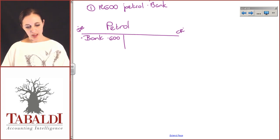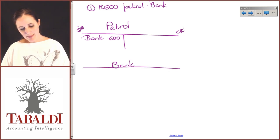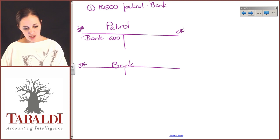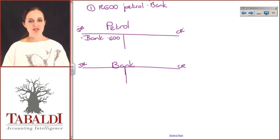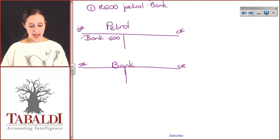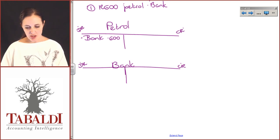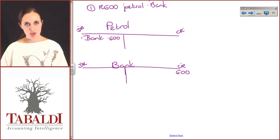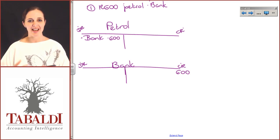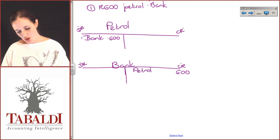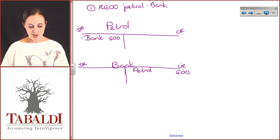You have to show the other side of the entry as well, meaning you've got to show the impact this has on the bank account. So we draw up another T-account with its debits and credits. The bank is an asset — an asset increases on the debit side and decreases on the credit side. We've taken 600 rand out of the bank to spend on petrol, which means the bank is decreasing, and the bank decreases on the credit side. In the bank account, I can see it's decreasing by 600, and the other side of the entry you'll find in the petrol account.